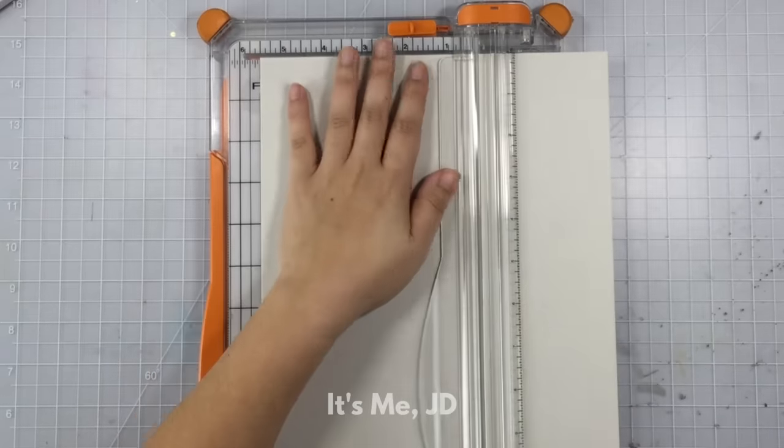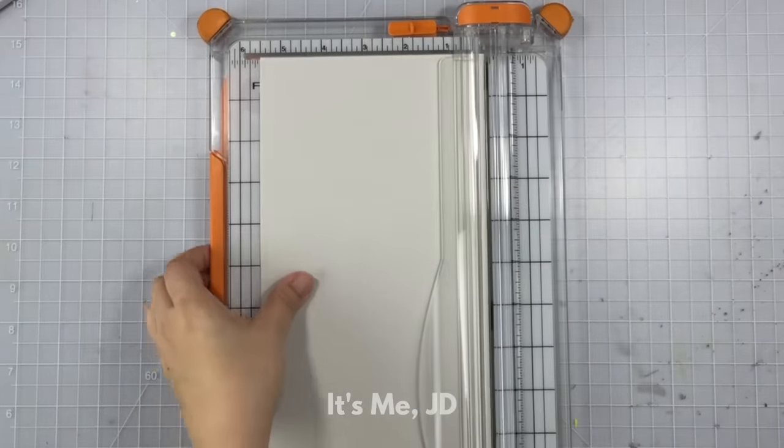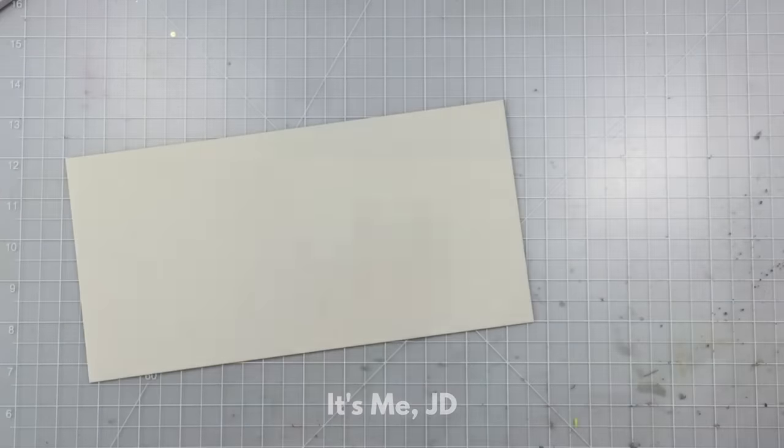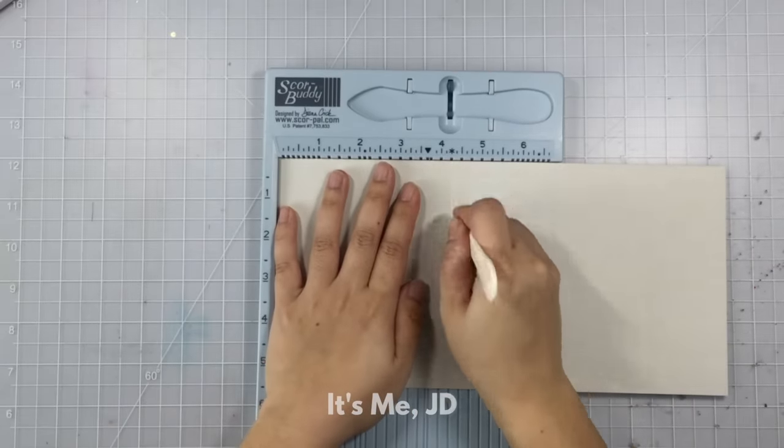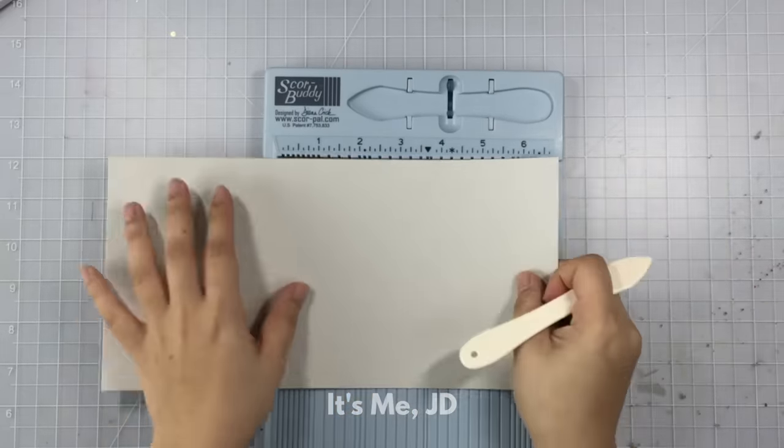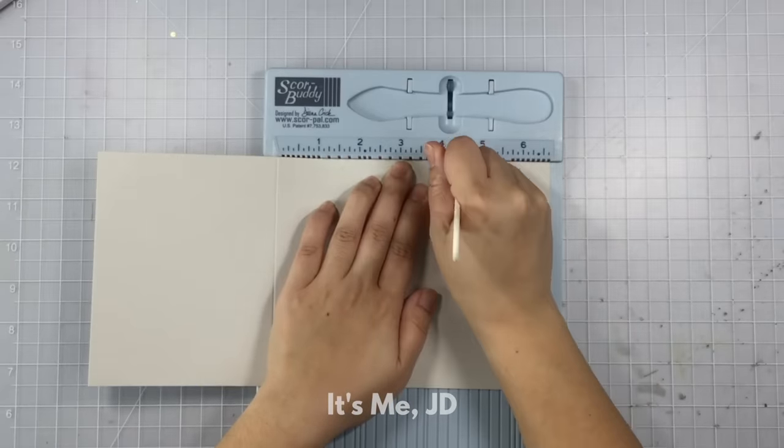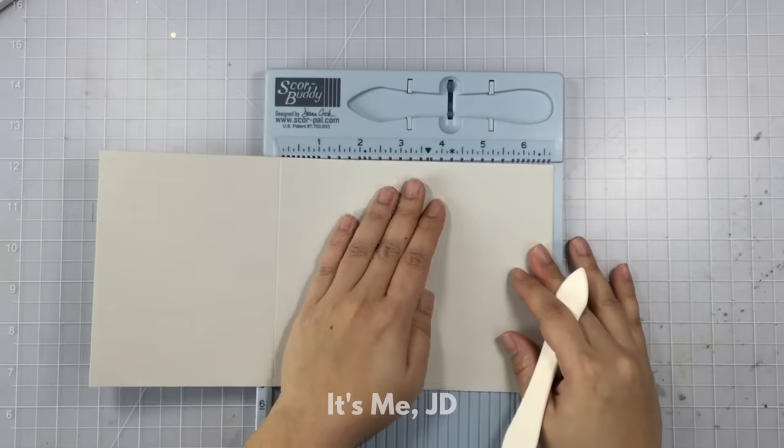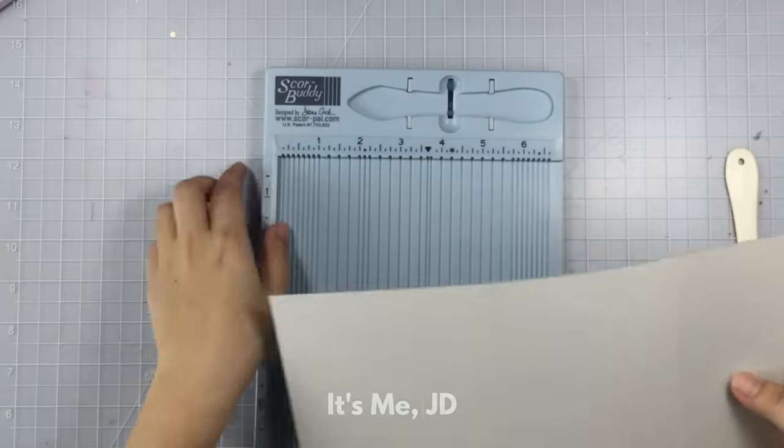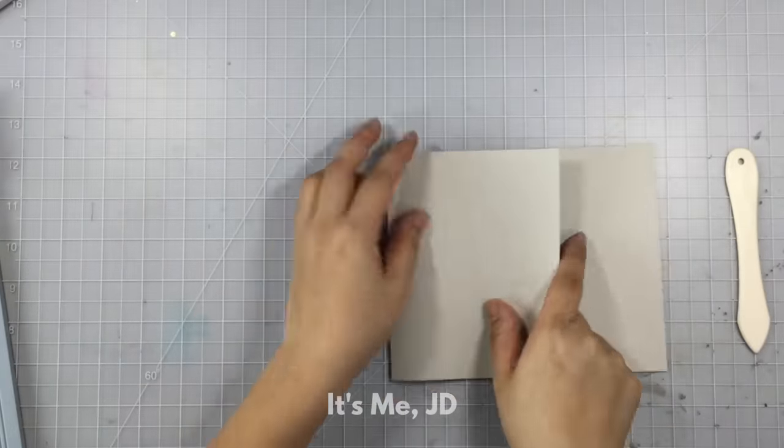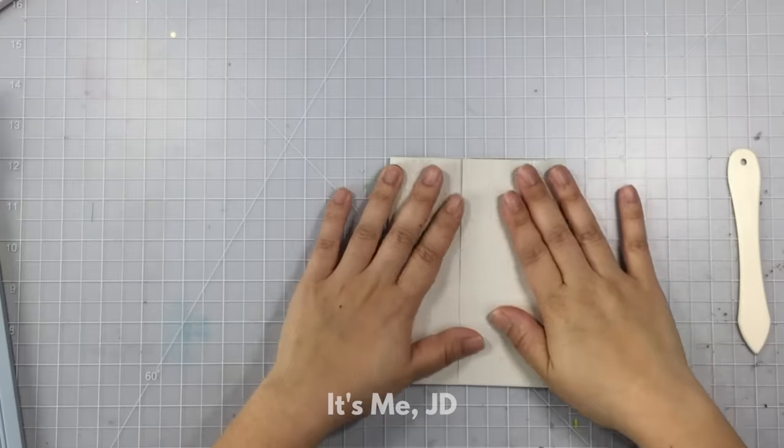You see a lot of this next method in wedding invitations, but I like to call it the overlapping gatefold. What I do is I cut an eight and a half by eleven inch piece of cardstock in half hot dog style lengthwise, and then I make a score line at four and a quarter inches and then eight and a half inches. And then once I crease those score lines, I have an overlapping gatefold on the right side.